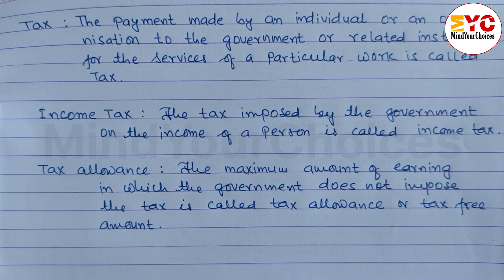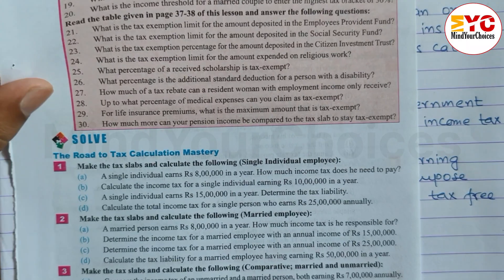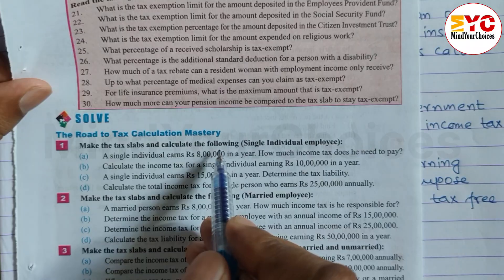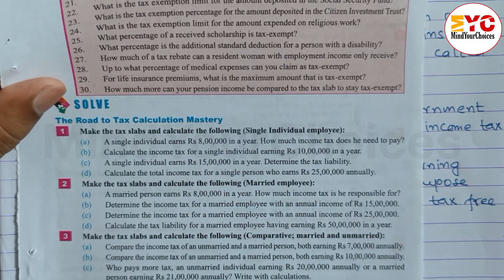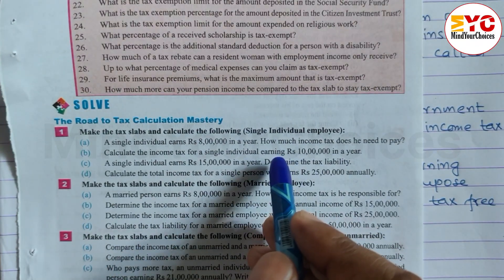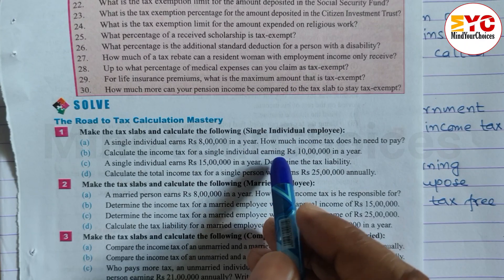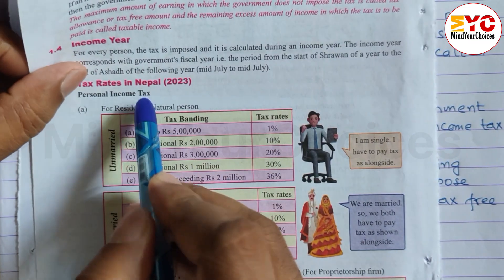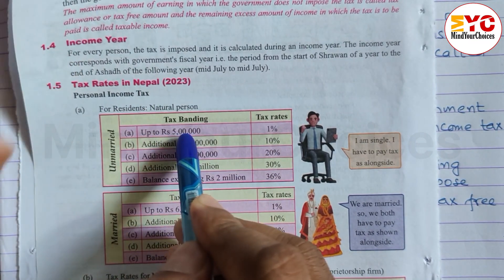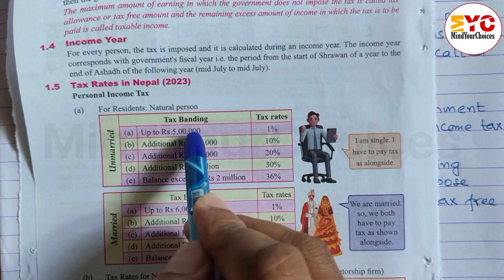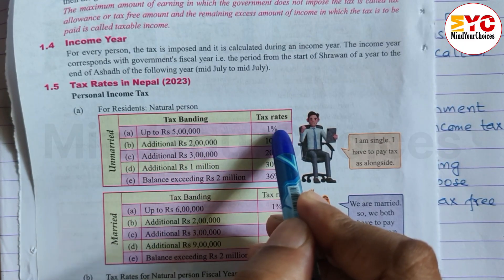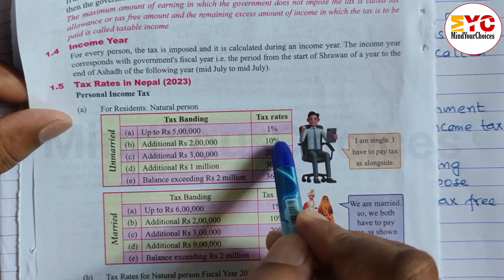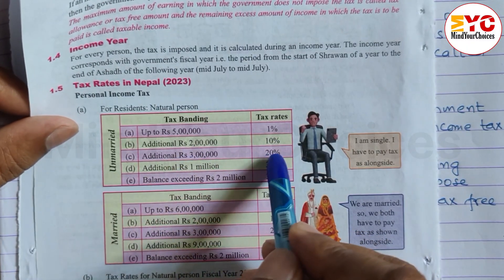Now let's start Exercise 1. In Exercise 1, we need to make a tax slab and calculate the income tax for a single individual employee. Look at this table: for a single individual, up to 5 lakhs income, 1% tax; additional 2 lakhs, 10%; additional 3 lakhs, 20%.